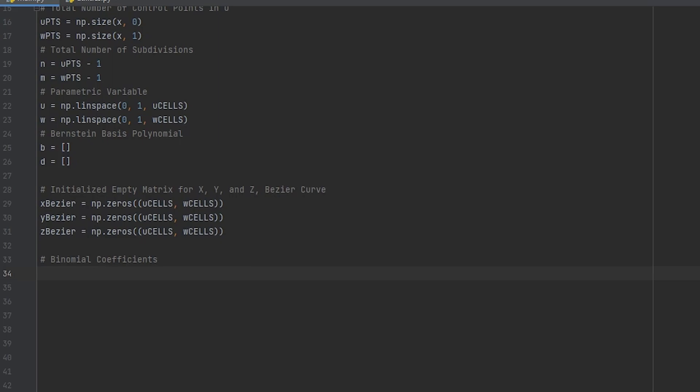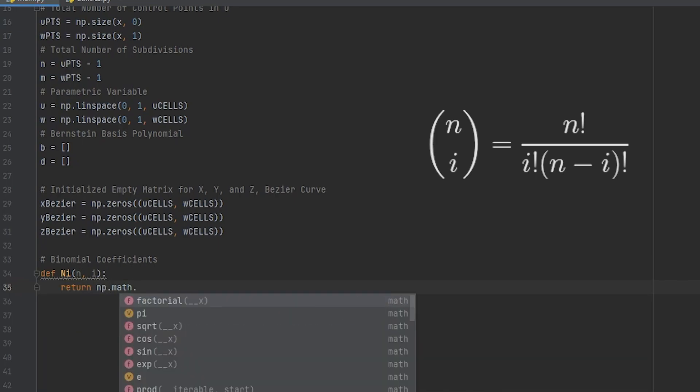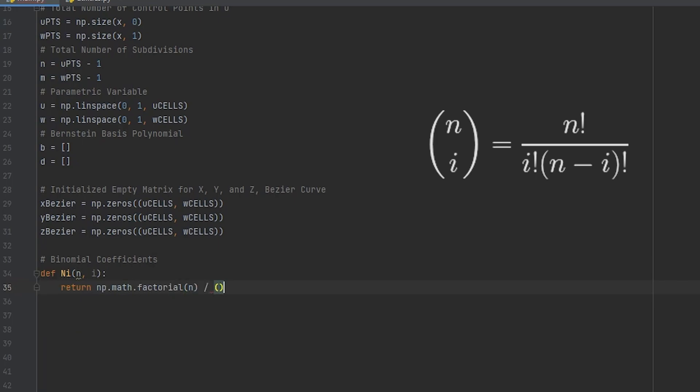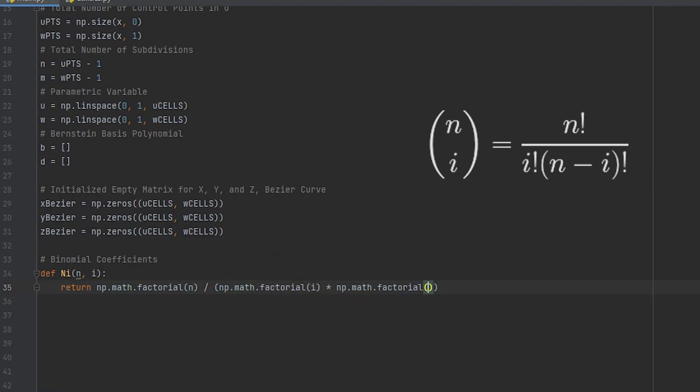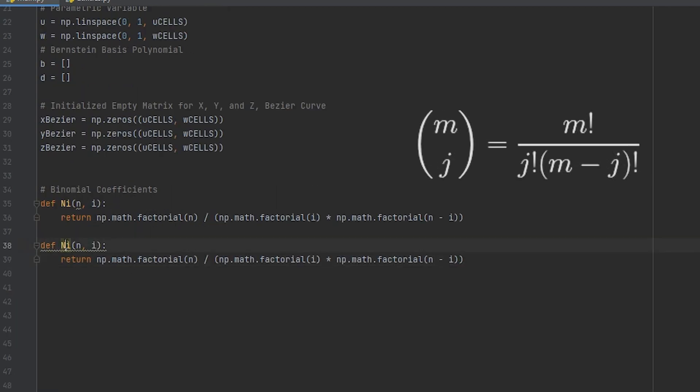So with the layout of the code settled, now we have to write the math down. The binomial coefficient, NI, will take N and I as inputs and I will return the result of the equation I have on screen. For the factorials, we can use numpy factorial function and for binomial MJ, again, this is how the books calls it, you just do the same but using J instead of I and M instead of N. I and J haven't been introduced yet but they are just counters for the for loops.